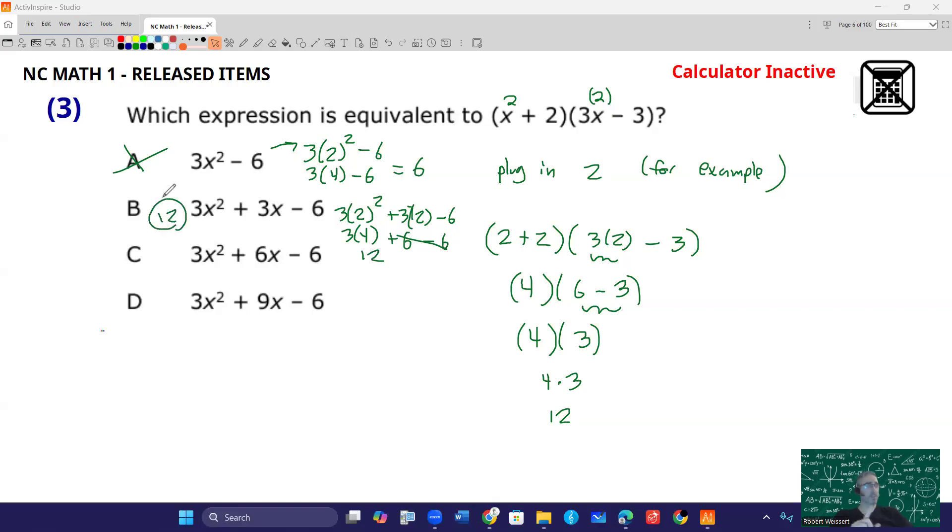But the catch is sometimes that doesn't always work. So test it in the other ones. So 3 times 2 squared plus 6 times 2 minus 6. That's 3 times 4. We already know that's going to be 12 plus 12 minus 6. Well, that's 24 minus 6, which is 18. So no good on that one. And then finally, 3 times 2 squared plus 9 times 2 minus 6. That's going to be, once again, 12 plus 18 minus 6. 12 plus 18 is going to be 30 minus 6 is 24.